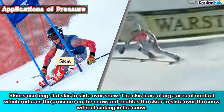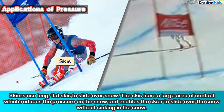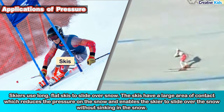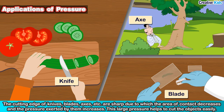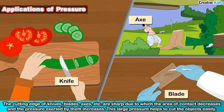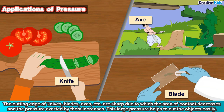Skiers wear long flat skis to slide over the snow. If you look at knives, blades, and axes — their cutting edges are sharp. The sharp cutting edges decrease the area of contact. When the area of contact decreases, the pressure exerted increases. This large pressure helps to cut objects easily — that is why sharpened objects increase pressure and help to cut objects easily.